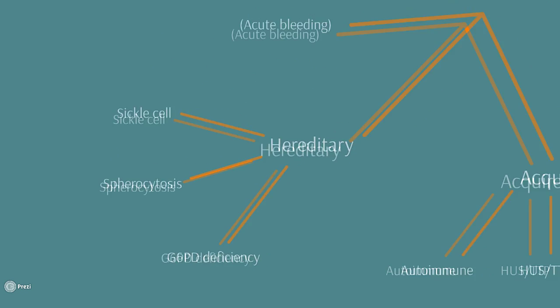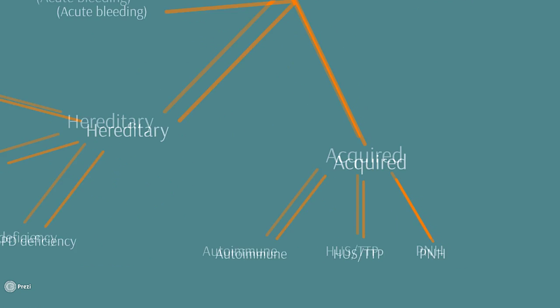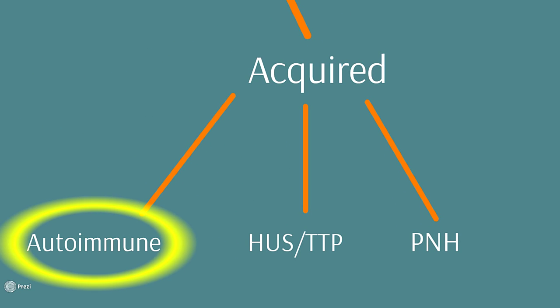Right, so we've covered some of the important hereditary types of hemolytic anemia, now let's talk about the acquired ones. First of all, let's talk about autoimmune hemolytic anemia. It sort of tells you what's going on in the name really, you get antibodies produced which are targeted to antigens on the wall of the red blood cell and cause them to be broken down earlier than they should be.